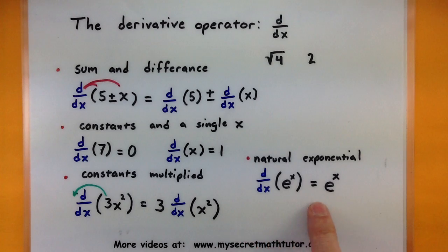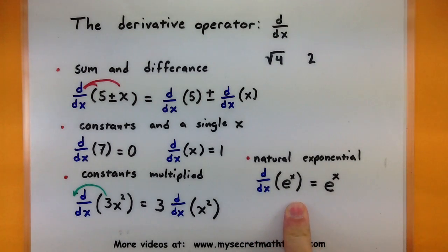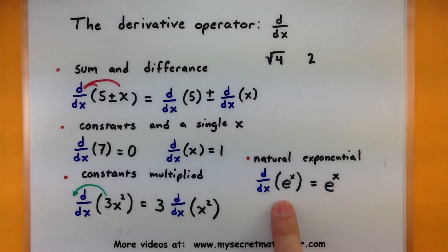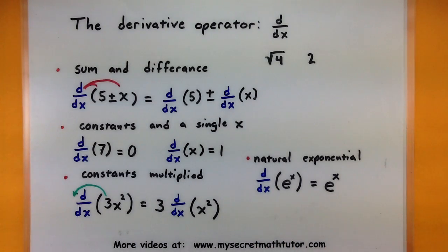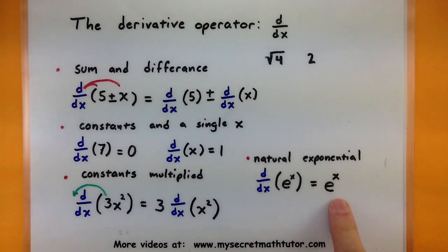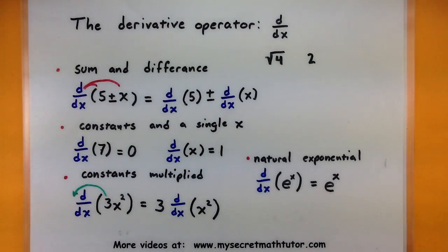The last of our basics is a really neat one — the derivative of the natural exponential, e to the x. When you take its derivative you get the same thing back; it doesn't change. This is a really handy rule and it's why you often like to see e to the x in calculus problems, because you know its derivative is just the same as itself. Let's play around with these basics by looking at lots of different examples.